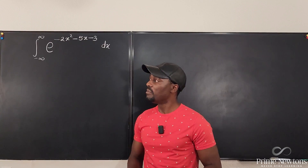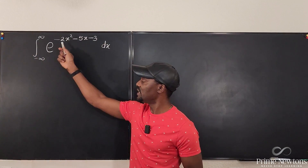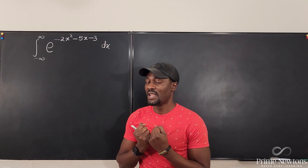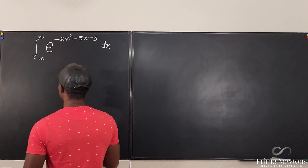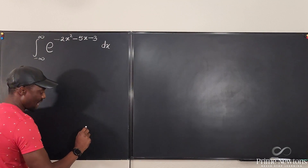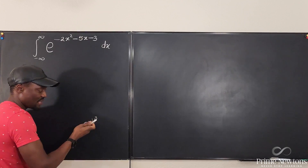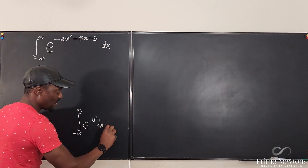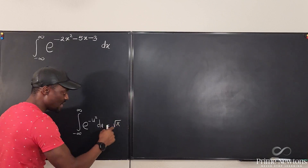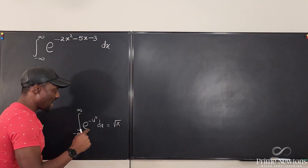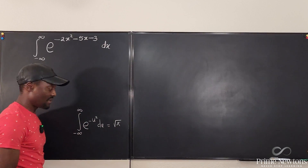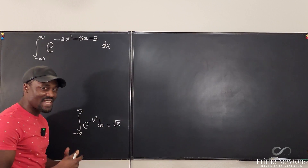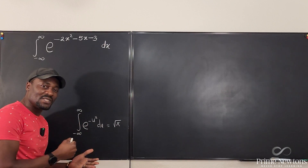This is an improper integral, but that's not what bothers me. What bothers me is how to deal with a quadratic sitting in the exponent of an exponential function. I know that if I can write this to look like e to the negative u squared and integrate from negative infinity to infinity, my answer is going to be the square root of pi. All I'm thinking now is: can I write this to look like that? If I can, I have my answer. You can always make a perfect square out of any quadratic — that's the idea.